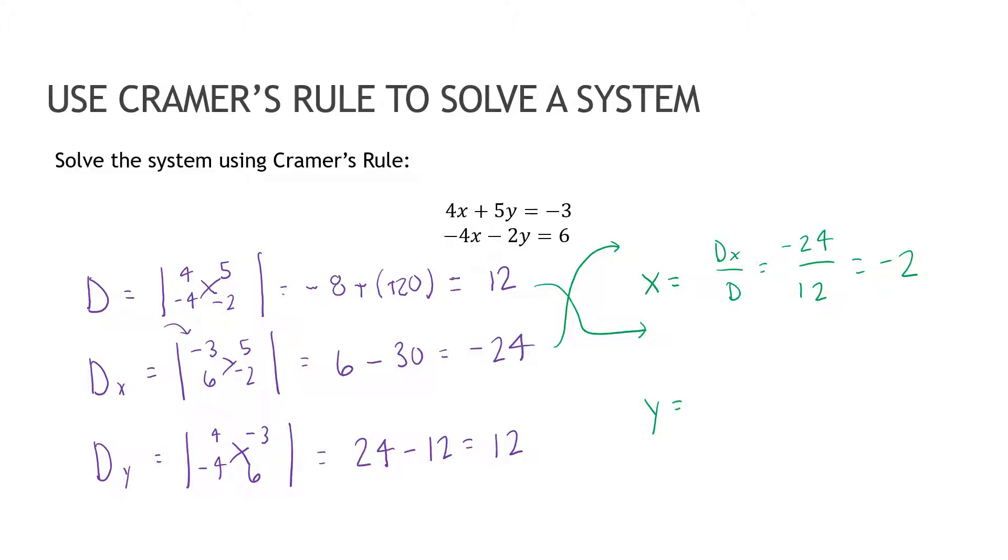And then for Y, we're finding the determinant of Y over D. Determinant of Y was 12. D was 12, which gives me one. Don't forget, just because you're showing work like this, my answer is still an ordered pair. So write my ordered pair as negative two comma one.